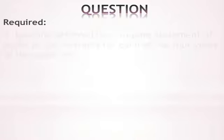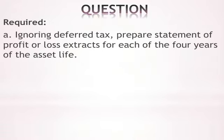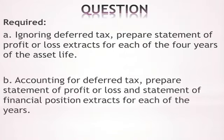The requirement has two parts. Part A: ignoring deferred tax, prepare statement of profit or loss extracts for each of the four years of the asset's life — meaning we account for current tax only. Part B: accounting for deferred tax, prepare statement of profit or loss and statement of financial position extracts for each of the four years — meaning we account for both current and deferred tax.